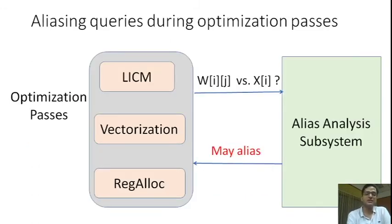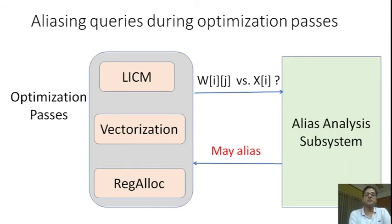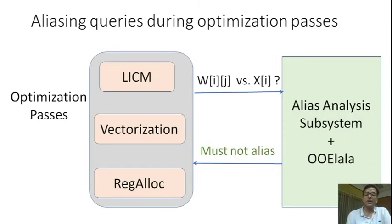A typical compiler is organized as a series of optimization passes. An optimization pass may require queries like: does W[i][j] alias with X[i] or not? Compilers also typically involve an alias analysis subsystem that responds to such queries. One possible response is may-alias. Using Oolala support, we are able to identify must-not-alias relationships, and thus the alias analysis subsystem is able to return must-not-alias responses for some of the may-alias responses that were appearing earlier. Oolala converts some may-alias responses to must-not-alias responses.